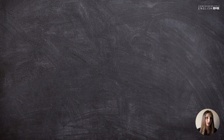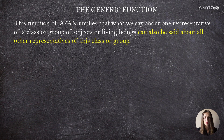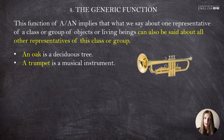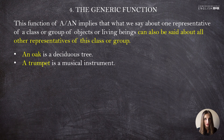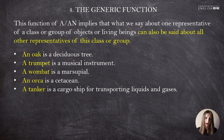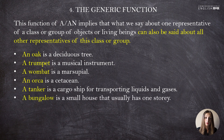The next function is the generic function. This implies that what we say about one representative of a class or group can also be said about other representatives. For instance: 'An oak is a deciduous tree' — true of any oak. 'A trumpet is a musical instrument.' 'A wombat is a marsupial.' 'An orca is a cetacean.' 'A tanker is a cargo ship for transporting liquids and gases.' 'A bungalow is a small house that usually has one story.'